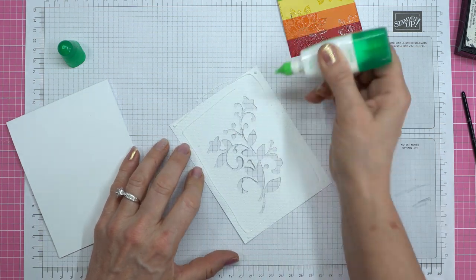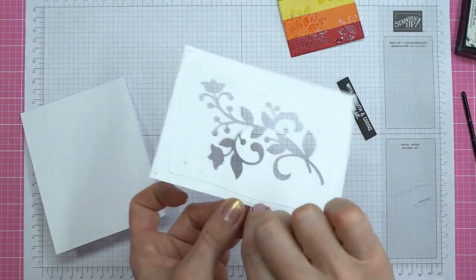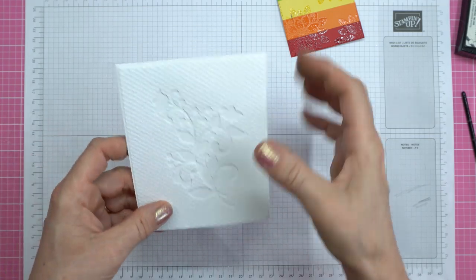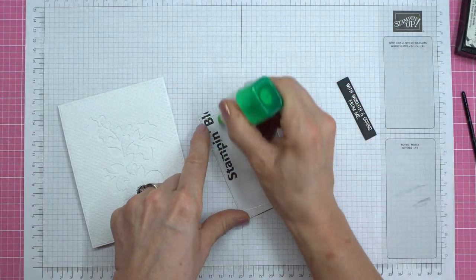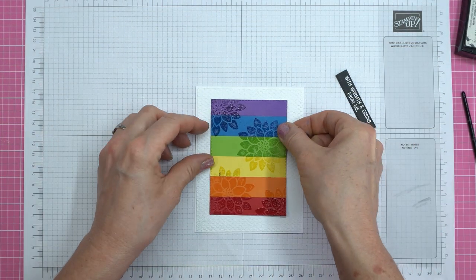Now, use your liquid glue and put your background on first. Because if you put your liquid glue on your rainbow background and then put it on your mat with all that die cutting in there, you're going to get glue everywhere. I speak from experience, okay? So put the background down first and then the rainbow on top.